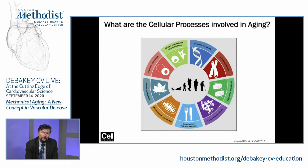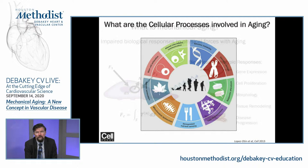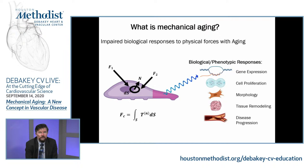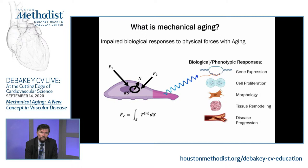Those are the processes involved in aging at the cellular level. But we think there's something missing, and that's what we're going to talk about today — mechanical aging at the cellular level. Mechanical aging is essentially an impaired biological response to physical forces with aging. Cells can sense the environment around them — the rigidity of the matrix, pressure, and flow. These biological responses to shear stress cause effects on gene expression, cell proliferation, morphology, and tissue remodeling. If they're behaving abnormally, it can result in disease.